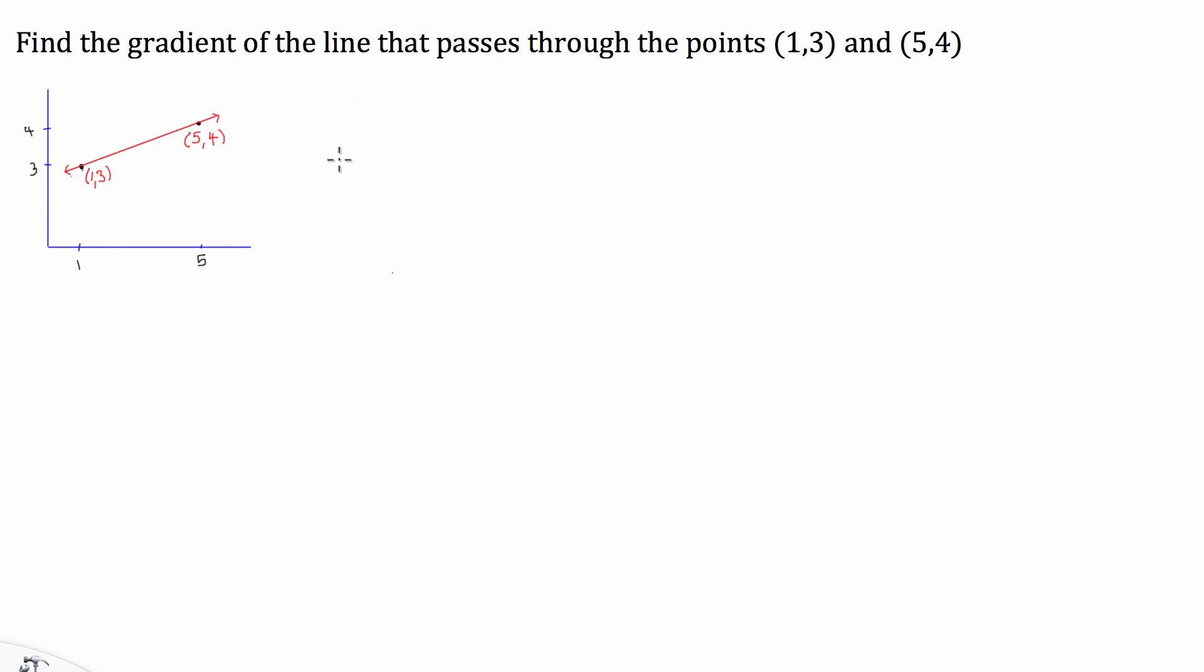Okay, we're given a question where it asks us to find the gradient of the line that passes through the two points (1,3) and (5,4). I've quickly drawn up a diagram representing what the line that's going to pass through these points would look like, so we can kind of get a feel for what we're doing.